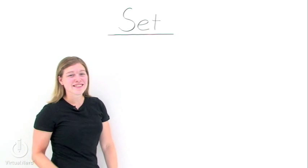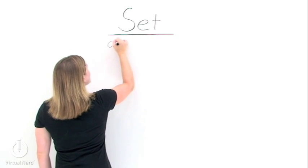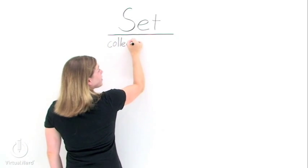What is a set? A set is just a collection of something. Take a chess set, for instance. That's a collection of something.